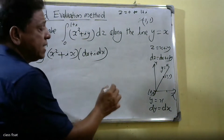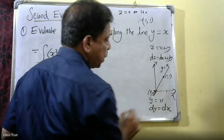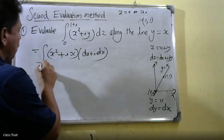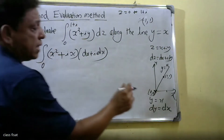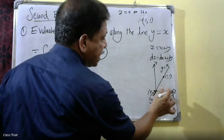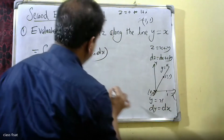If x is equal to 0, the lower limit is 0. The upper limit is equal to 1.